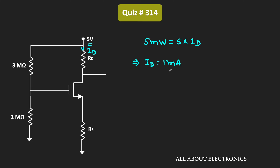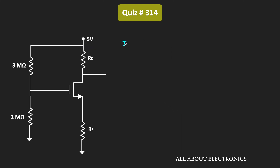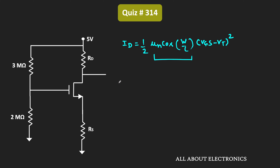Now that we know the drain current, we can use the transconductance expression: gm = 2·ID / (VGS − VT). First we need the value of VGS − VT. When the MOSFET operates in the saturation region, the drain current is ID = (1/2)·μn·Cox·(W/L)·(VGS − VT)². With ID = 1 mA and the device parameter (1/2)·μn·Cox·(W/L) = 8 mA/V², we get: 1 mA = 8 mA/V² · (VGS − VT)².